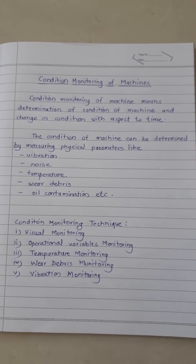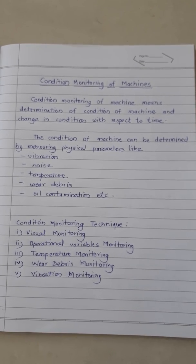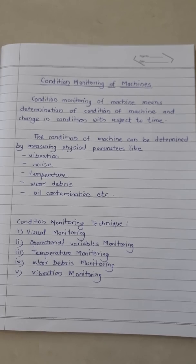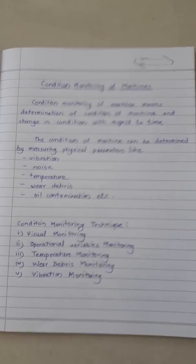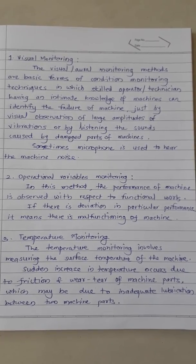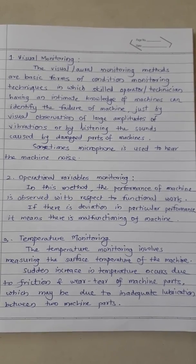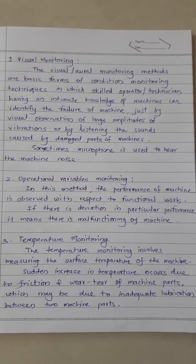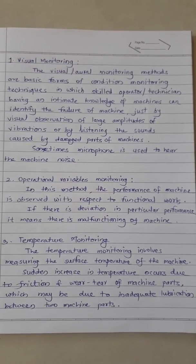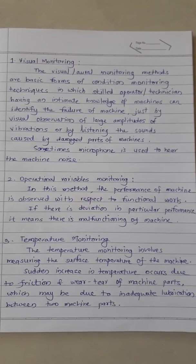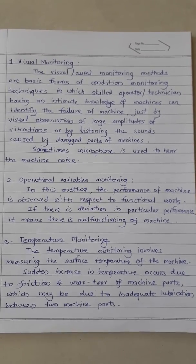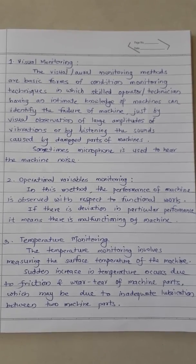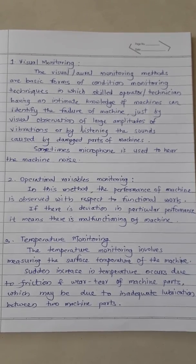There are some techniques for condition monitoring. First is visual monitoring. Second is operational variables monitoring. Third is temperature monitoring. Fourth is wear debris monitoring. And fifth is vibration monitoring. Visual monitoring: the visual or oral monitoring methods are basic forms of condition monitoring techniques in which a skilled operator or technician having intimate knowledge of machines can identify the failure of a machine just by visual observation of large amplitude vibrations or by listening to sounds caused by damaged parts. Sometimes microphones are used to hear the machine noise.